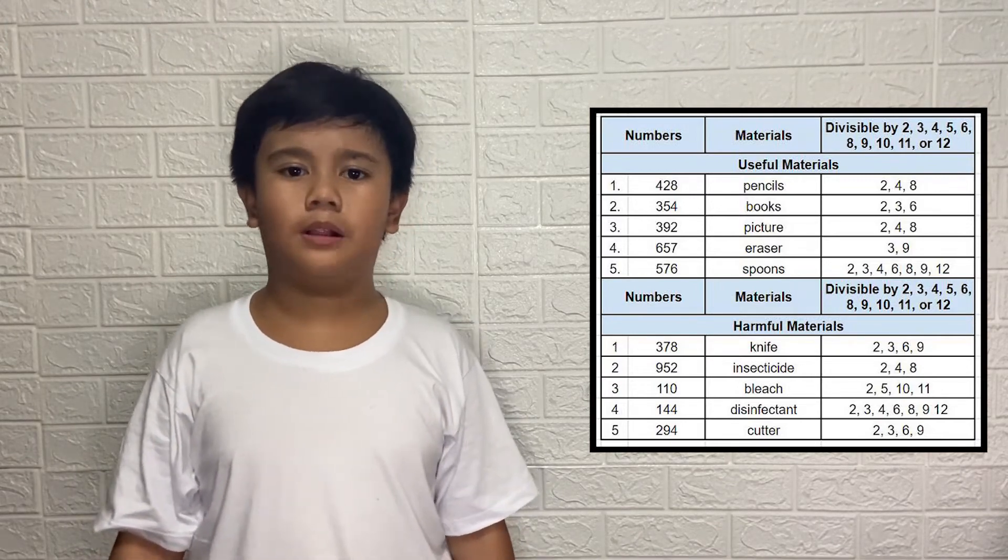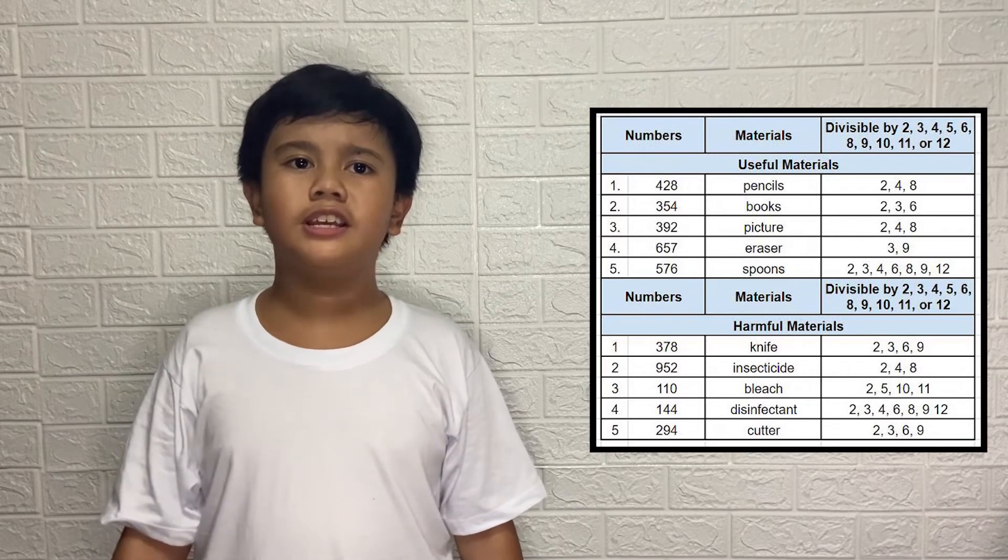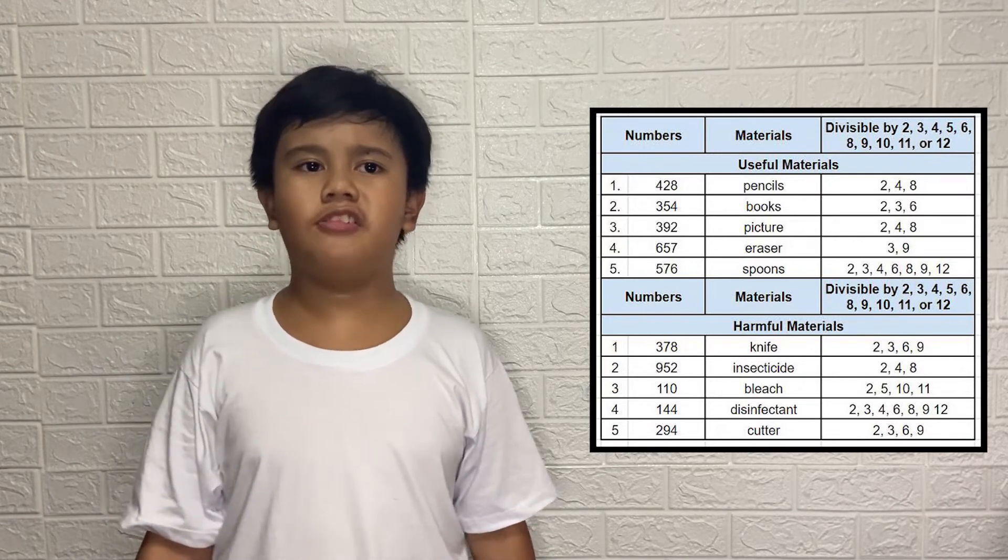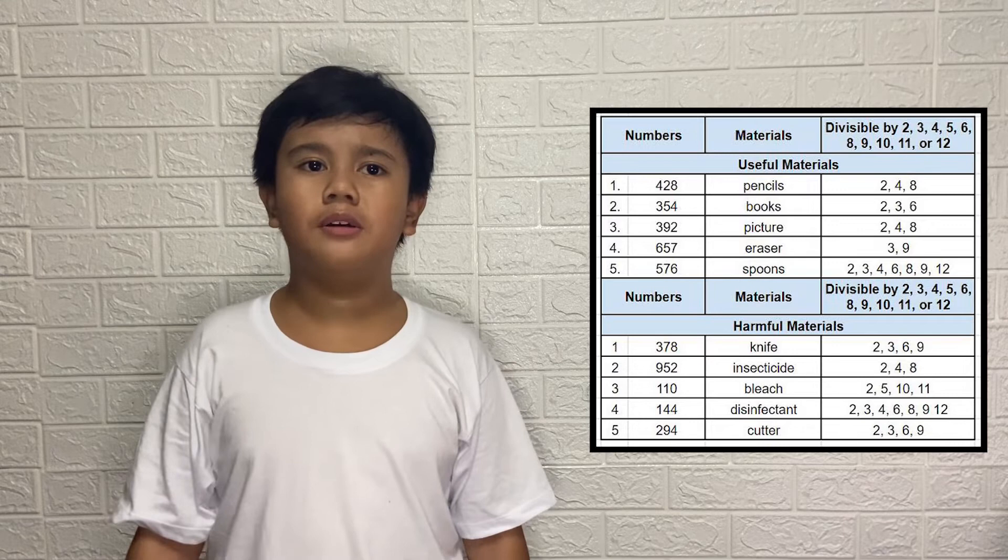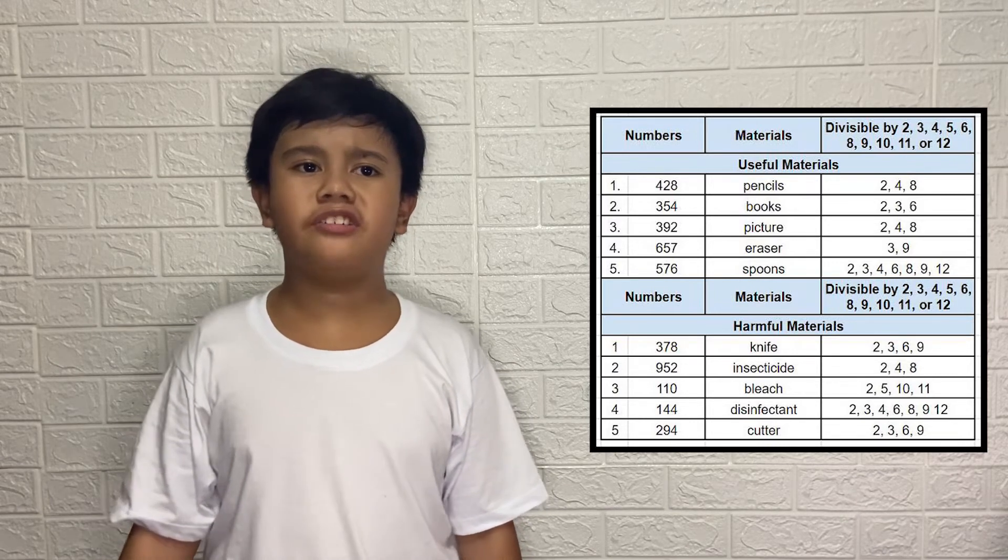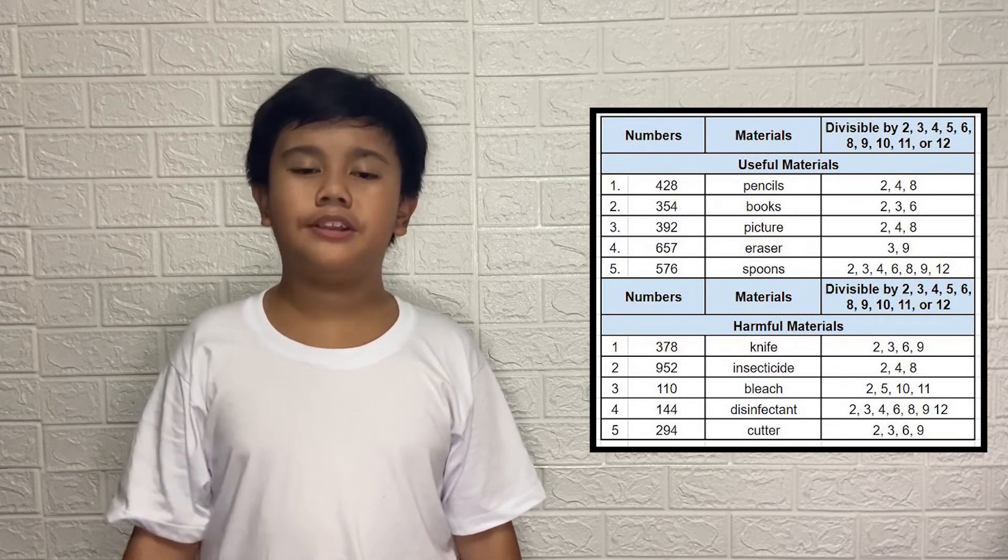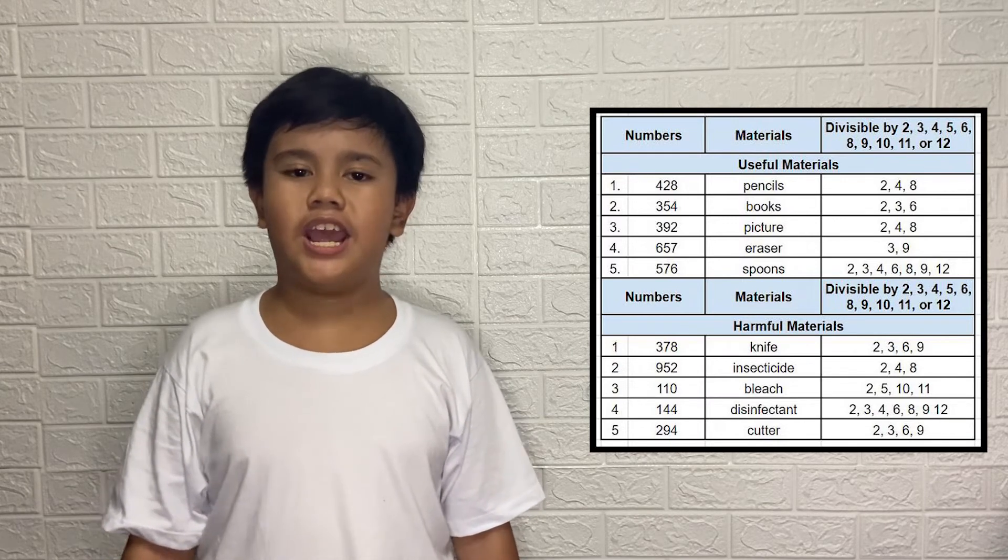378 is divisible by 2, 3, 6, and 9. 952 is divisible by 2, 4, and 8. 110 is divisible by 2, 5, 10, and 11.